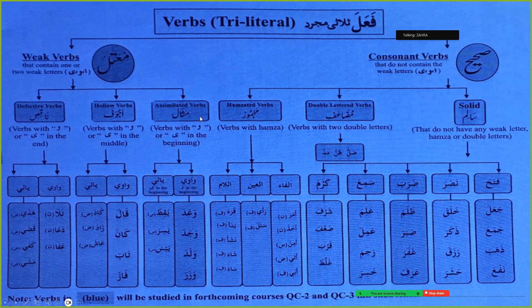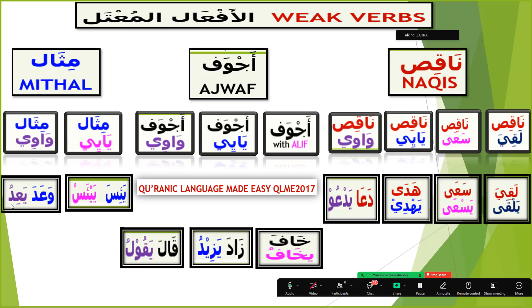The weak letter in mithal occurs at the fa kalima, in ajwaf at the ayn kalima, and in naqis at the laam kalima. For lafif, there are two weak letters — either the first and the third, or the second and the third. Jazakallahu khairan everyone for your time. May Allah subhanahu ta'ala accept it and increase us all in knowledge.